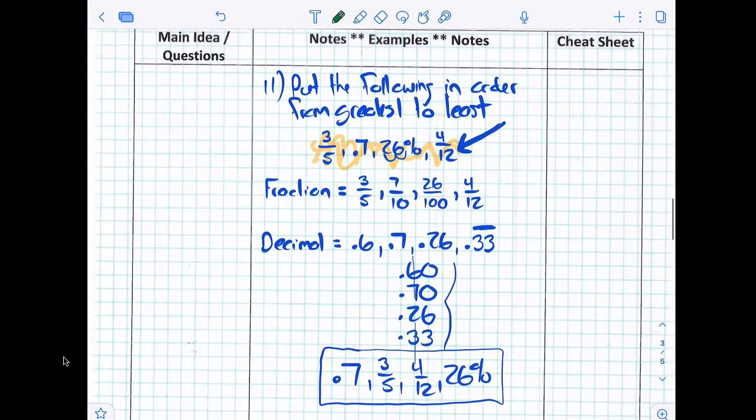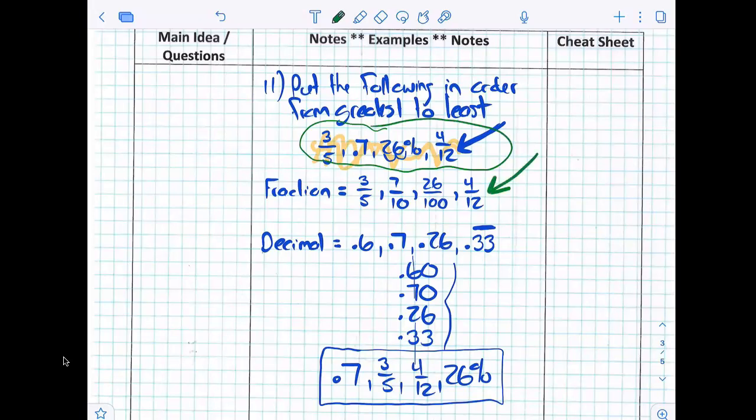This one did not necessarily use a number line, but we had to get all four of these numbers into the same form, right? Yeah! We actually got them into fraction form, but then we realized, oh my god, common denominator is really hard. Because you can't compare them until they have common denominators, right? So we said, well, let's not use fractions.